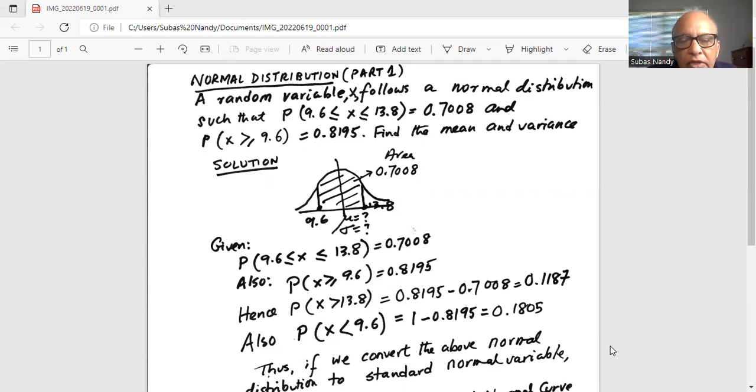We also know P(X ≥ 9.6) = 0.8195. So what is the probability of X greater than 13.8? It is 0.8195 - 0.7008 = 0.1187.